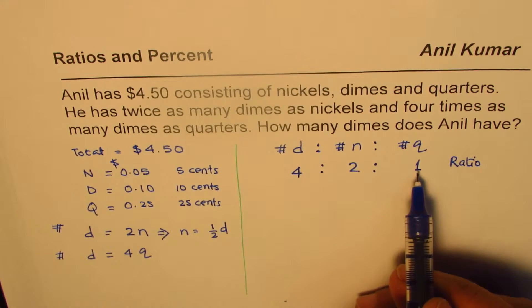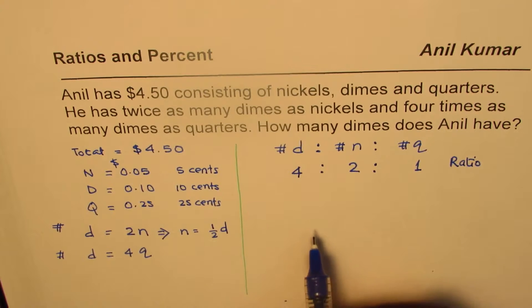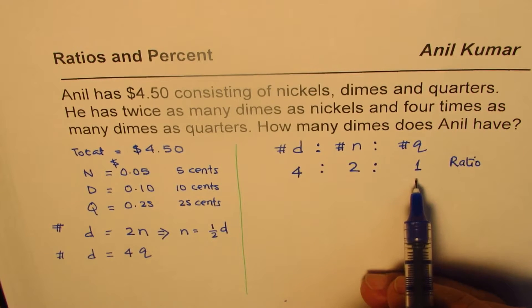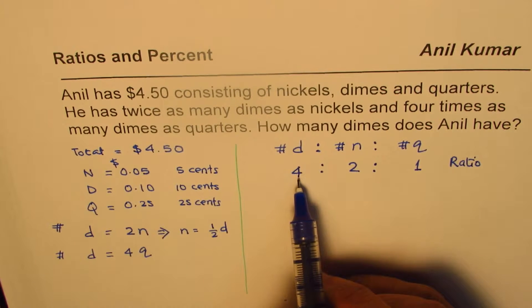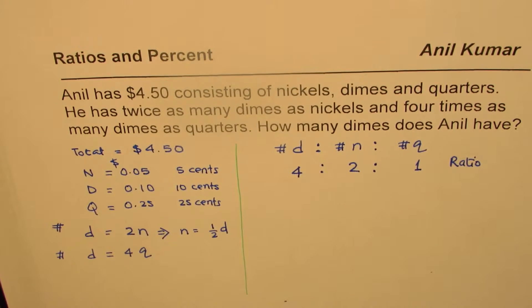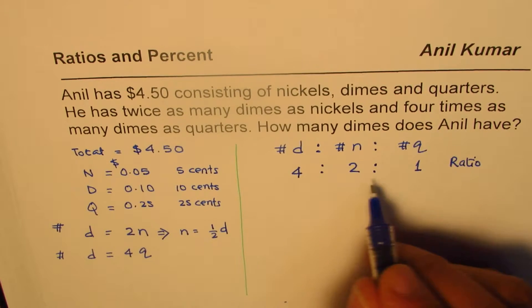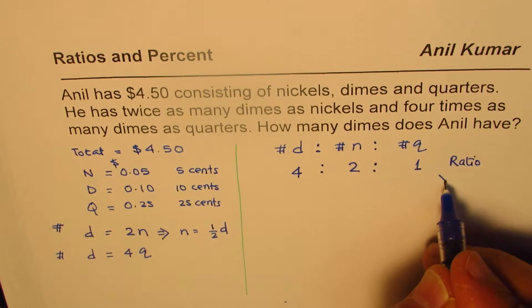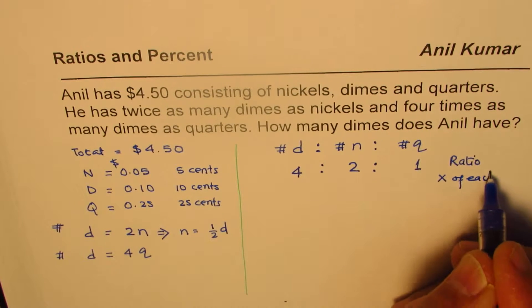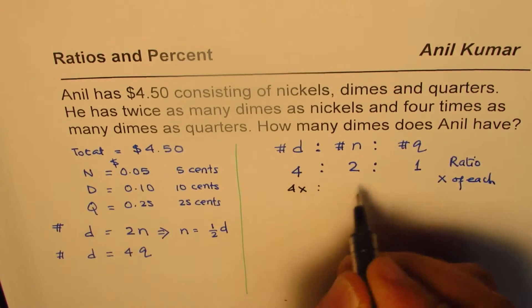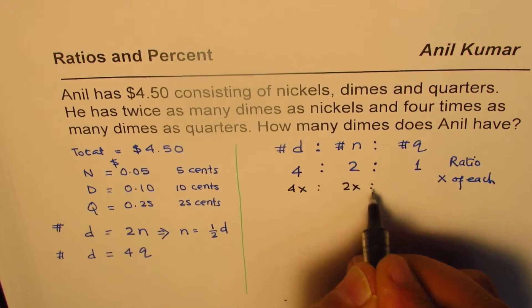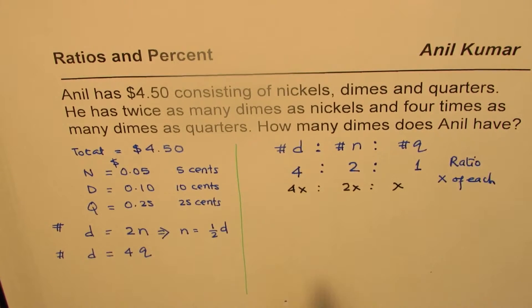So if I have one quarter, I will have two nickels and four dimes. If I have two quarters, four quarters, I will have four nickels and eight dimes times two. So what we don't know here is how many of each do we have? So let's say we have x of each. So if we have x of each, their numbers will be, we can write this as 4x is to 2 times x is to 1 times x, which is x. So that becomes their numbers.